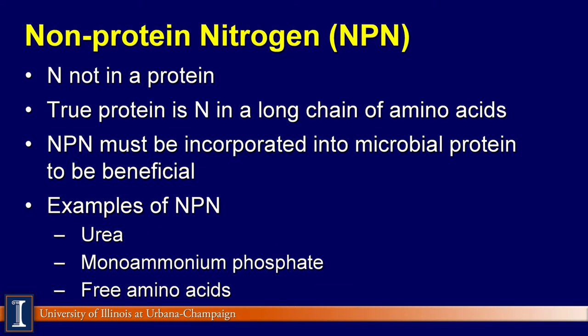In contrast to crude protein, which is total nitrogen multiplied by 6.25, true protein is only the nitrogen in a long chain of amino acids multiplied by 6.25.